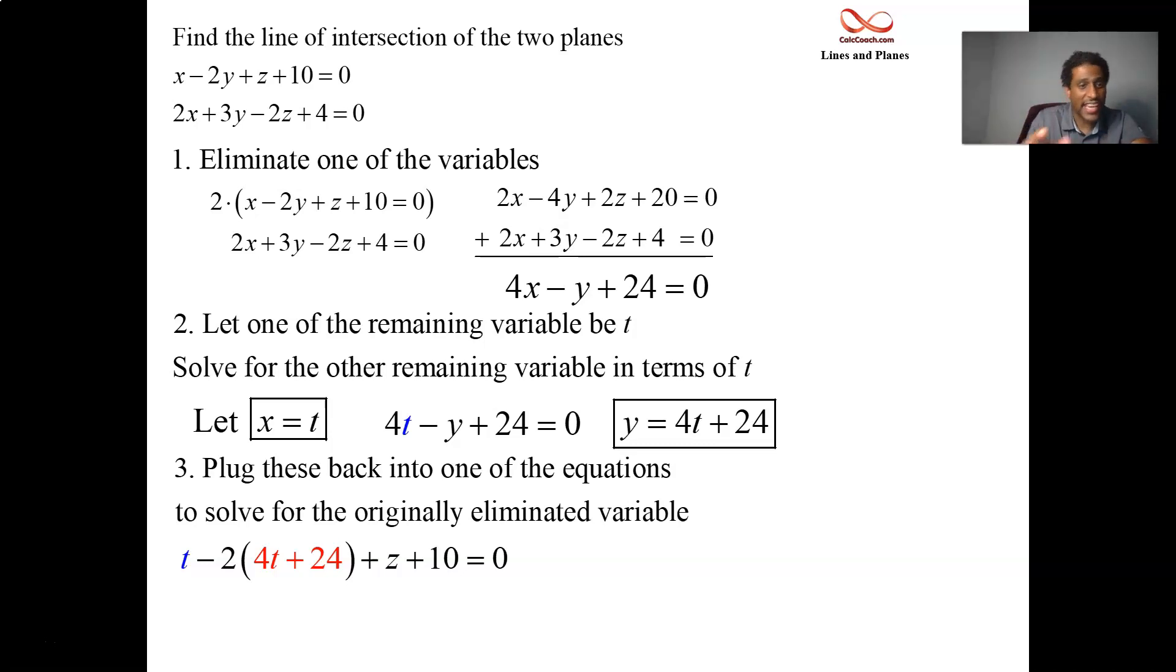t - 8t - 48 plus z + 10. Put the -48 and the 10 together. You get a -38. Shift that to the other side is 38. z equals 7t, when you shift it to the other side, plus 38.